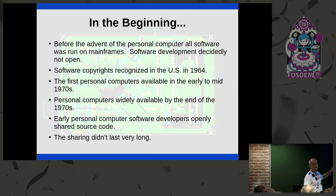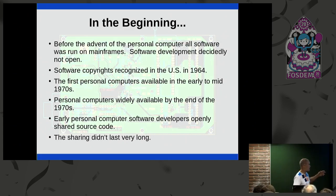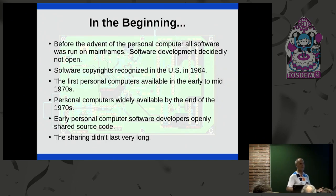It was pretty obvious, even back then in the very early days of computing, that software copyrights were coming. The big companies lobbied the major governments, and in 1964, software copyrights were recognized in the U.S. The rest of the world followed suit pretty quickly.